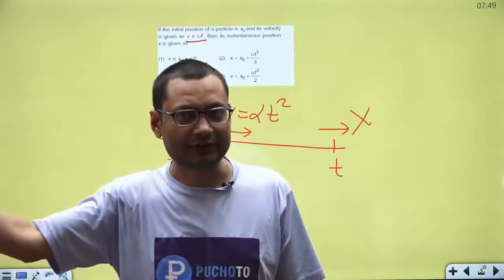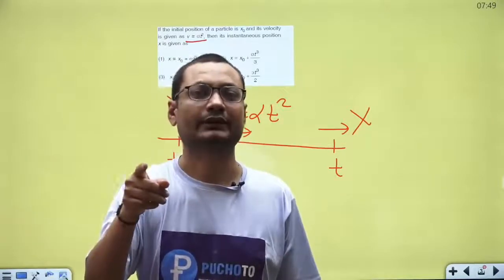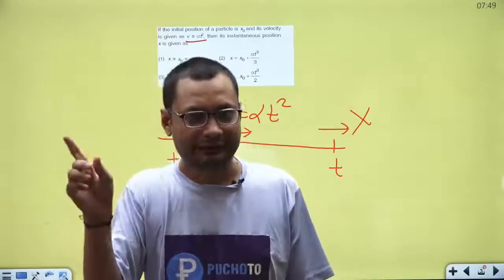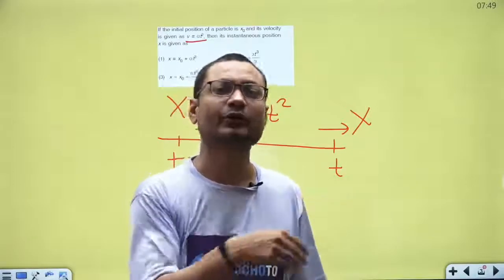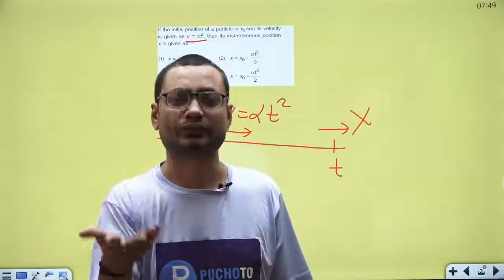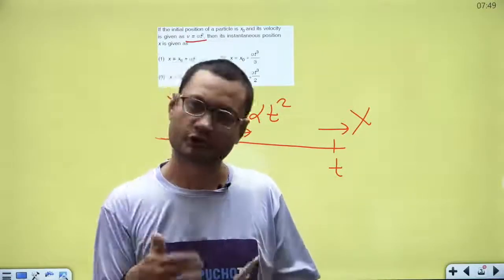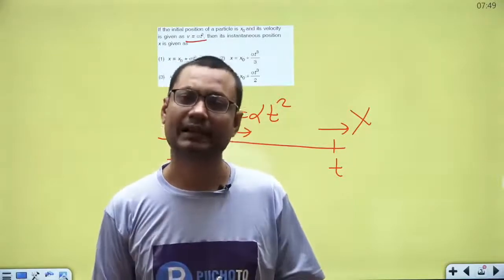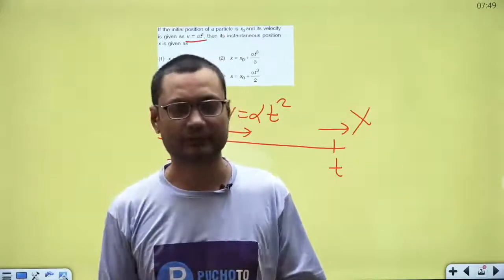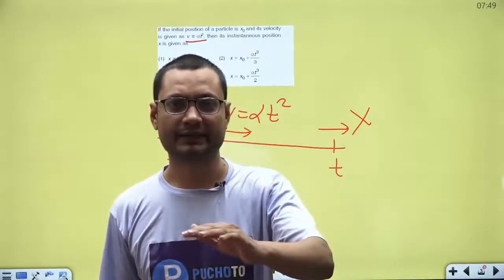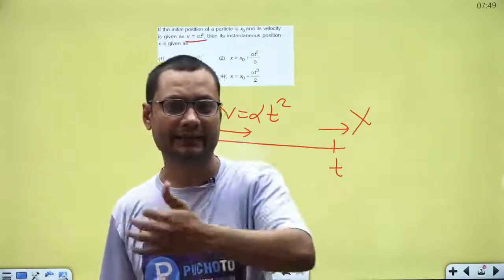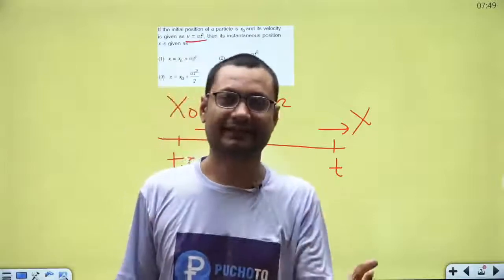Acceleration से velocity चाहिए हो तो integrate करो: ∫a dt = v2 − v1। Velocity से position या displacement चाहिए हो तो integrate करो: ∫v dt = x2 − x1। Velocity को integrate करो तो position and displacement मिलता है। Summary: x से v — differentiate; v से a — differentiate; a से v — integrate; v से x — integrate।